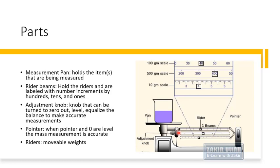The adjustment knob is used to correct any error or increase or decrease in weight before weighing, setting the balance to zero level for accurate measurement. The pointer shows the zero level and must be brought to zero before weighing any object. The riders are movable and show the correct weight — the lower one shows the 10-gram scale, another shows hundreds, and another shows the hundred scale. These are the parts of a single beam analytical balance.